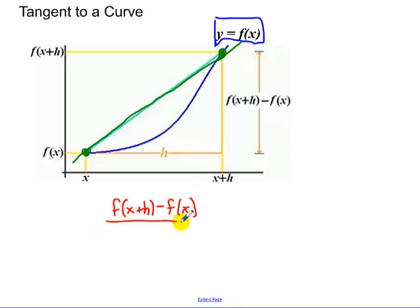But what I want is a tangent line. A tangent line, this h would get really, really small. So that's where the limits that we've been talking about have come into play.